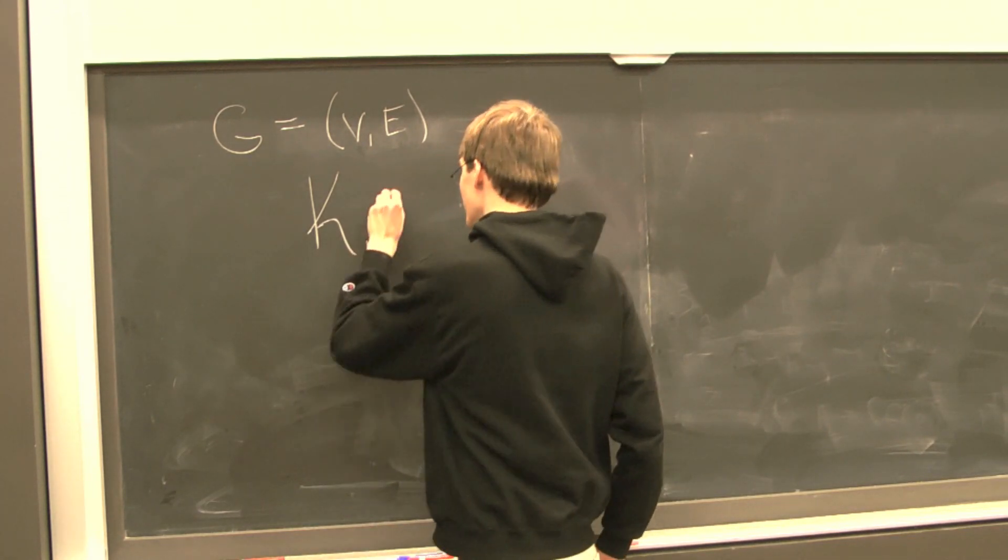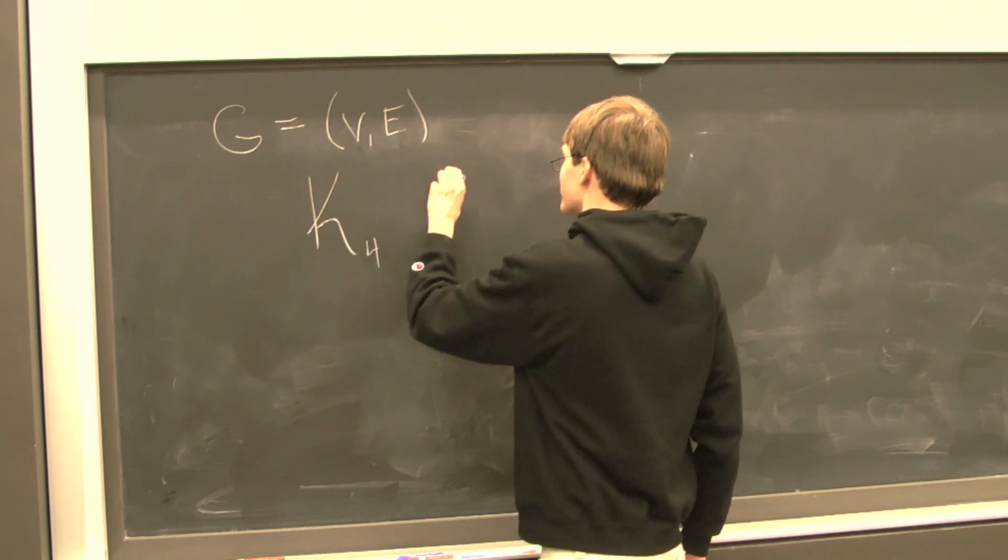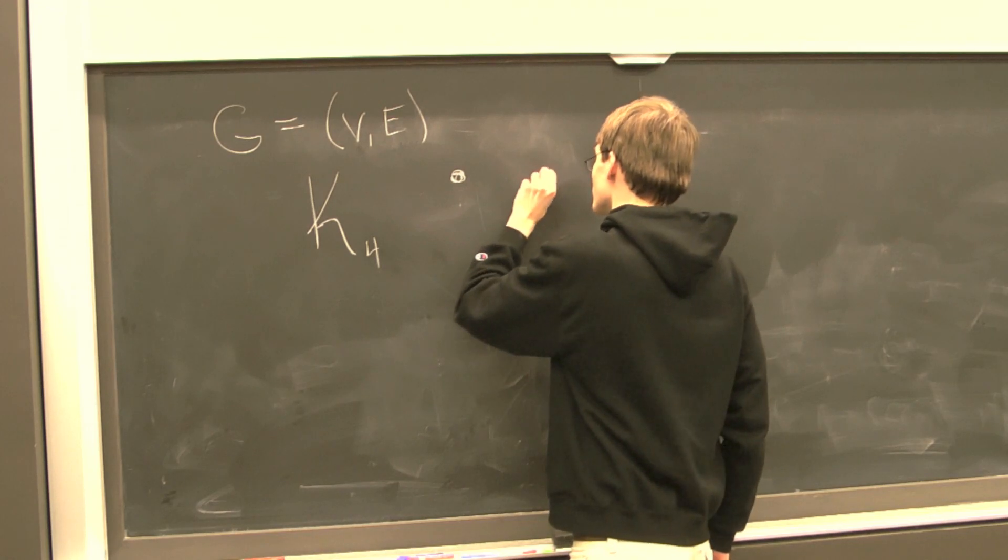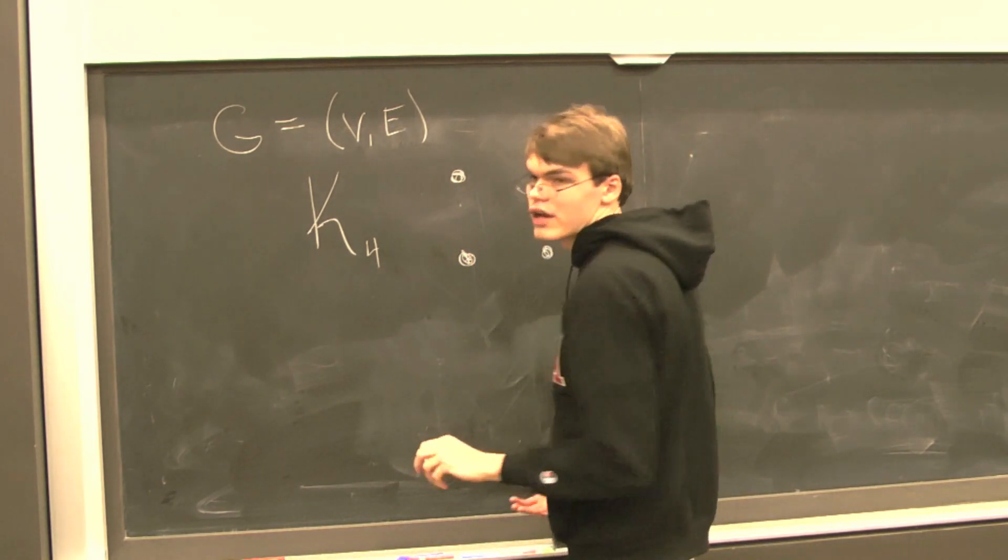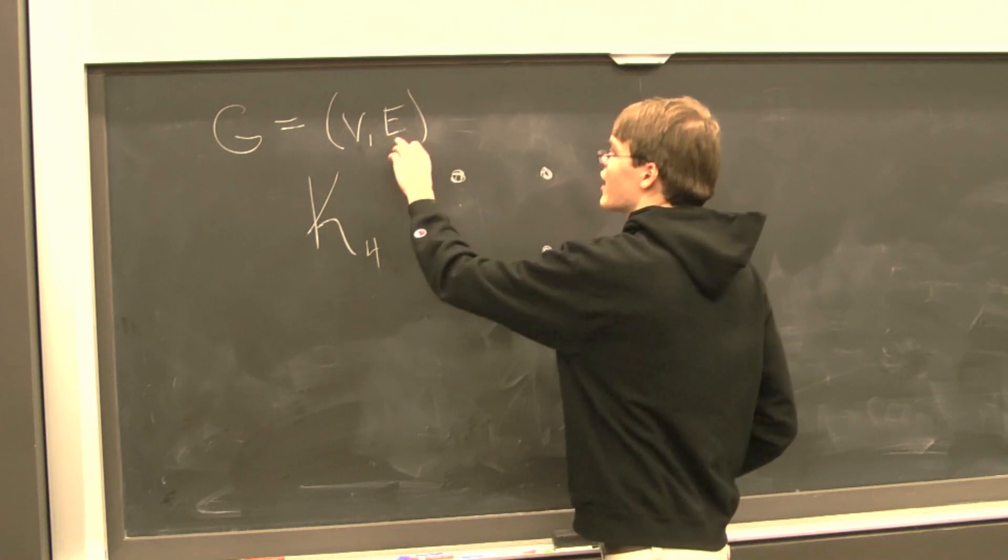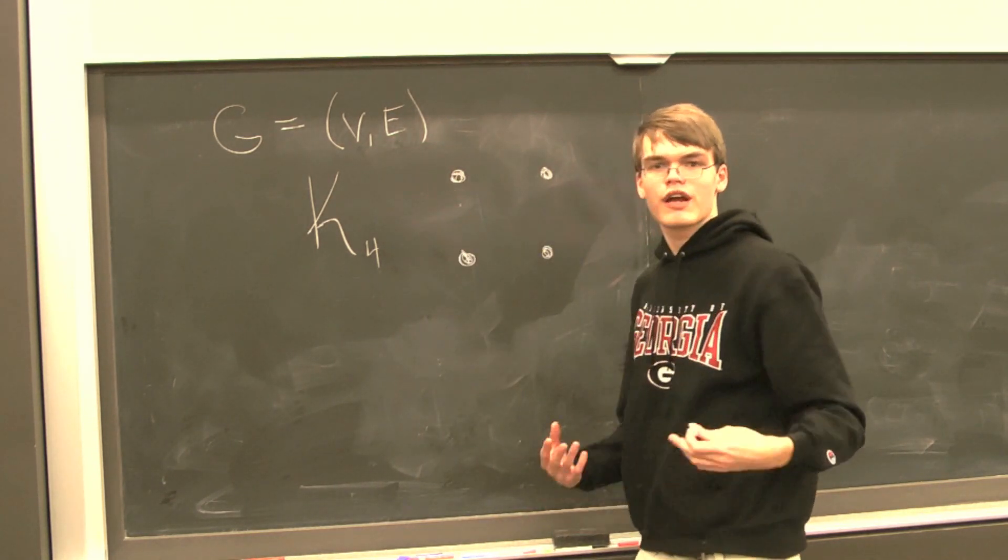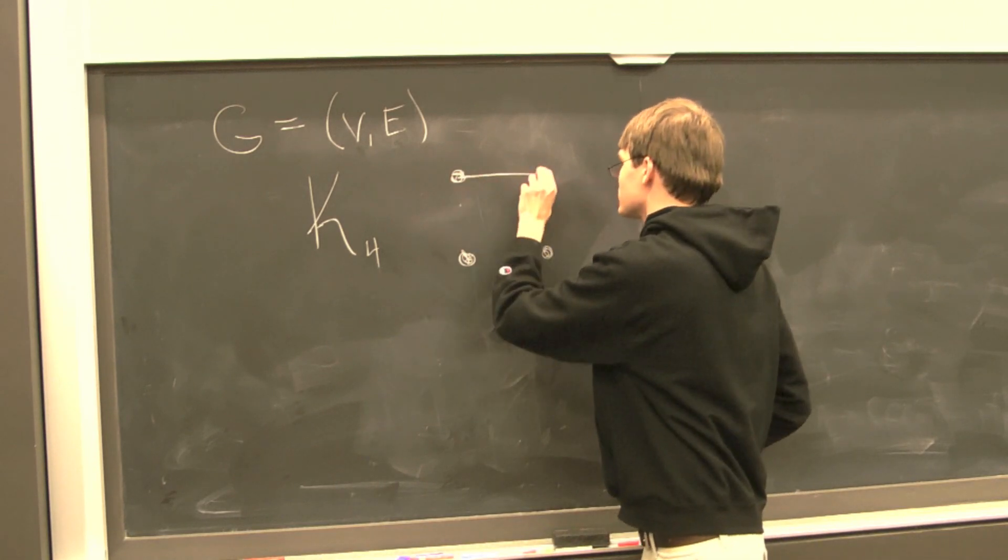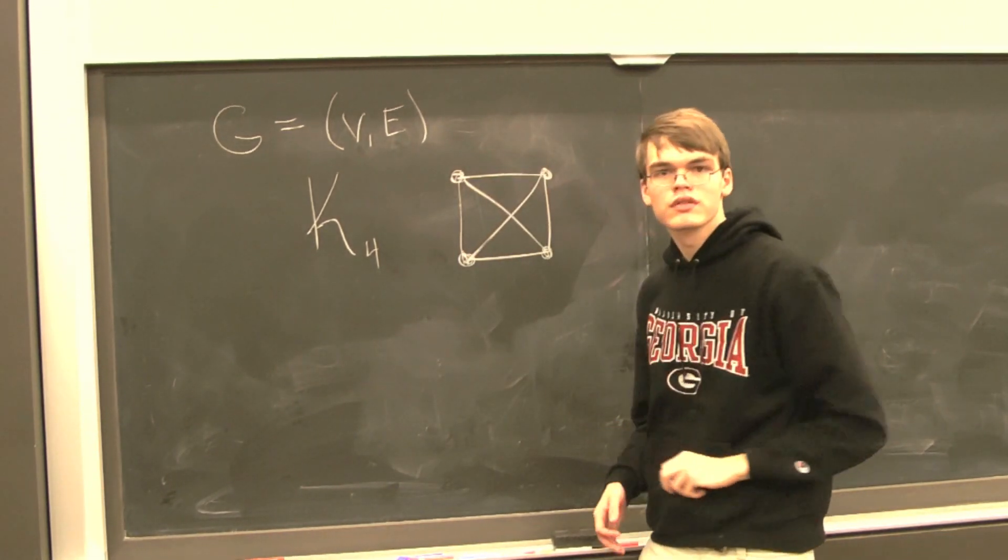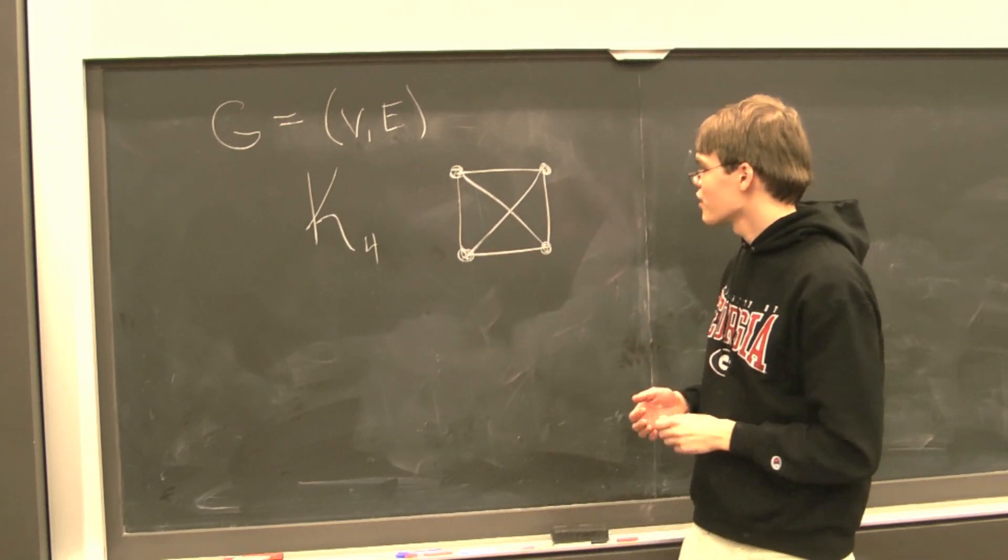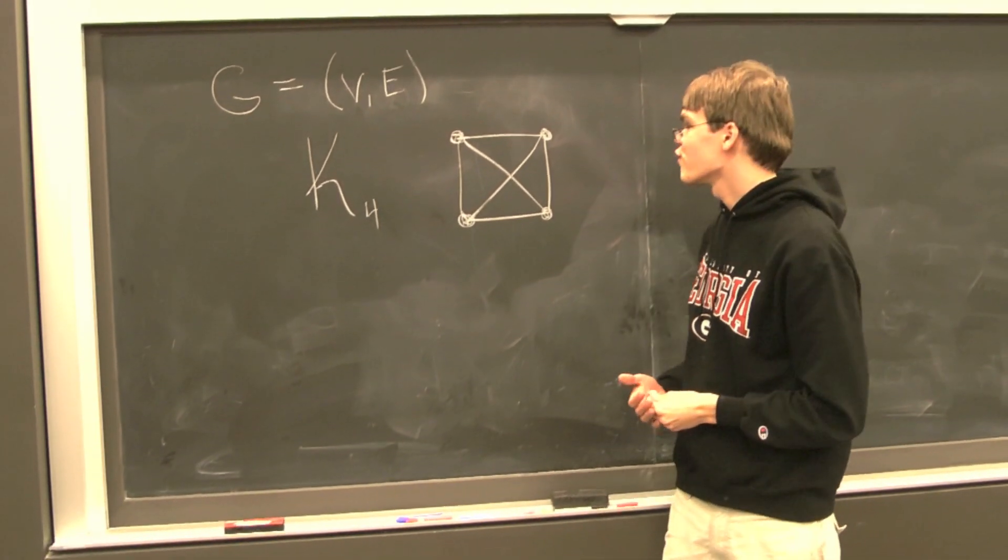For convenience, let's consider K4. We arrange our points in a cyclic manner, or arrange our vertices in a cyclic manner. And like I said, we have an edge between every possible pair of points. So it would look something like this. This is a complete graph on four vertices.